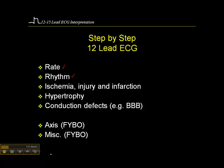Later on in some later presentations, I'll also talk about hypertrophy and conduction defects such as bundle branch blocks. I'm not going to talk about axis calculation because the focus of this workbook is on recognition of acute myocardial infarction. Axis deviation is not that critical for myocardial infarction, but it does become more important as supplementary evidence for things like hypertrophy and certain cardiac defects.